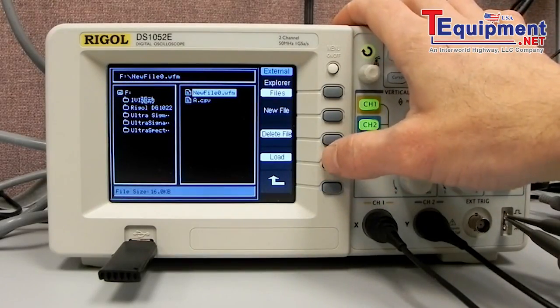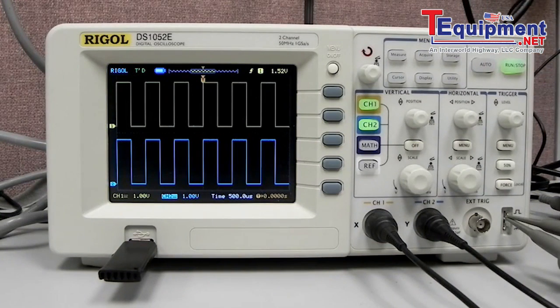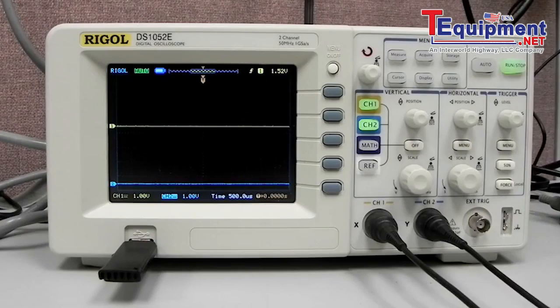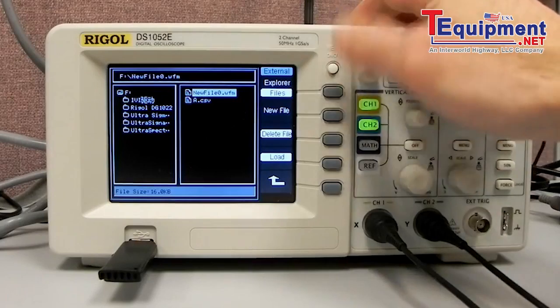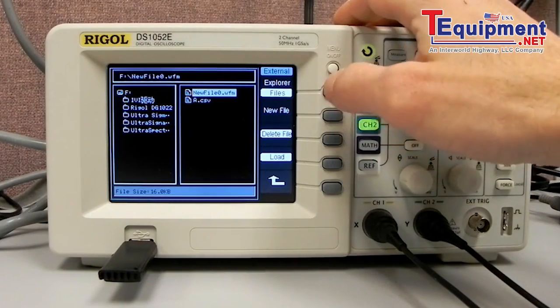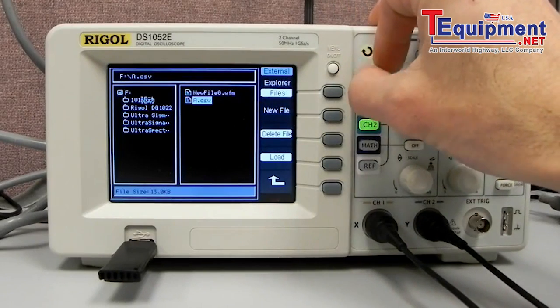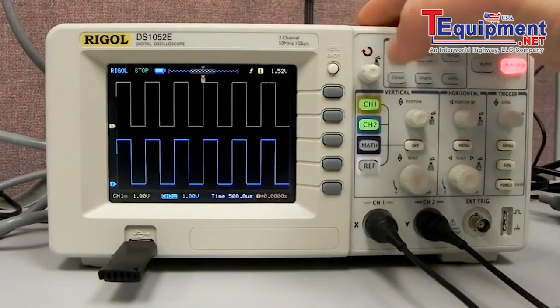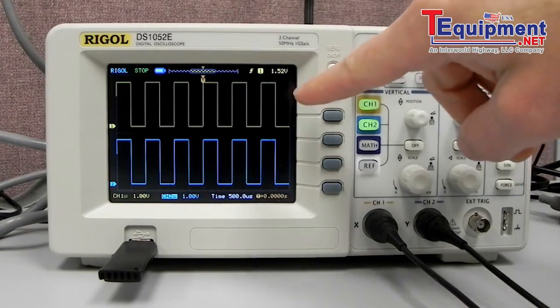We can also load that. I'm going to hit run so we're back to triggering and I'm going to disconnect channel 1 and channel 2. Now let's load that waveform from the external file so I hit storage, external and now I'm going to hit load on the file of interest. I'll select that new file waveform that we just collected and hit load.